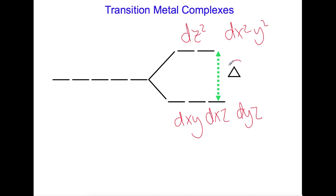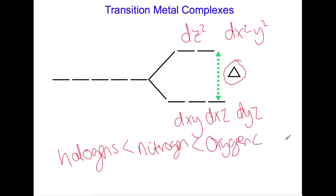This value here, delta, is determined by which ligands you use. So this is the crystal field splitting, which can be small or large. It's smallest for halogens, larger for ligands which bond through nitrogen, larger still for those that bond through oxygen, and largest for those that bond through a carbon atom.